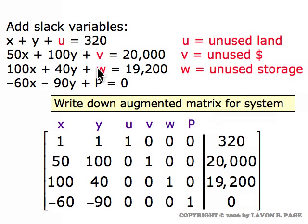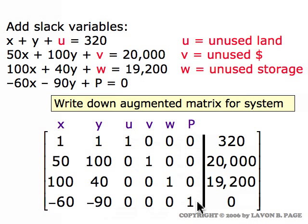We started with two variables X and Y, then introduced three slack variables U, V, and W, and we treat P as a variable since it appears in the bottom equation. So we have a column for the X coefficients, for the Y coefficients, a column for each of the three slack variables U, V, and W, a column for the profit P, and then the far right column represents the numbers on the right sides of the equal signs in all the equations.